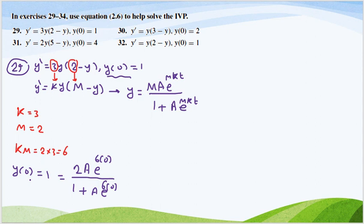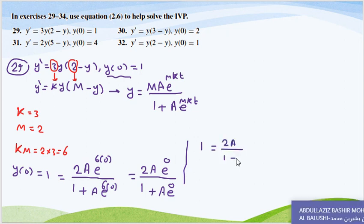We can simplify. 2 times A times E to the power 0 over 1 plus A times E to the power 0 equals 1. This gives us 1 equals 2A over 1 plus A.